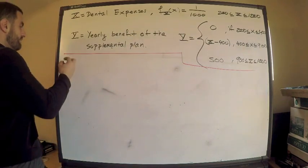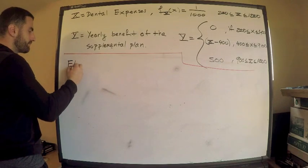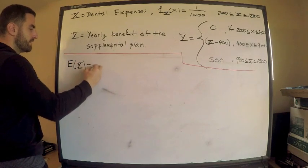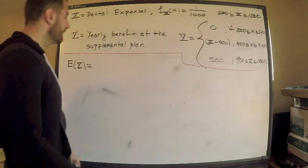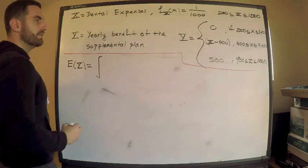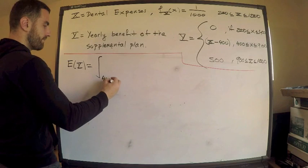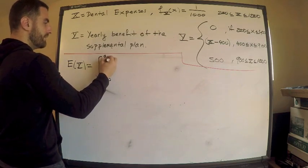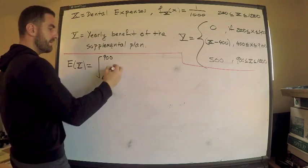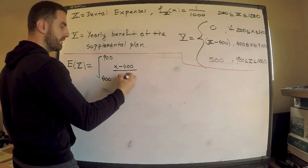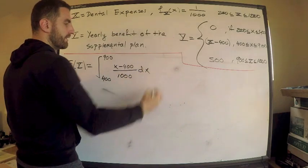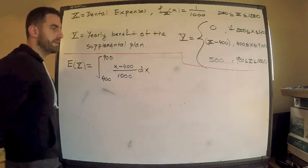All right. So what do we got? For expected value of Y, it's zero from 200 to 400. It finally kicks in once I get to 400. So this is going to be the integral from 400 to 900, of X minus 400 divided by 1000, right? Because that's my PDF, my PDF.